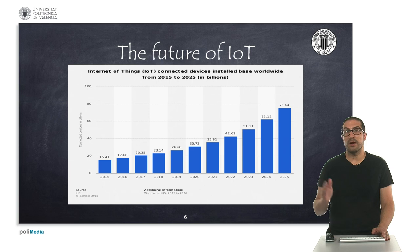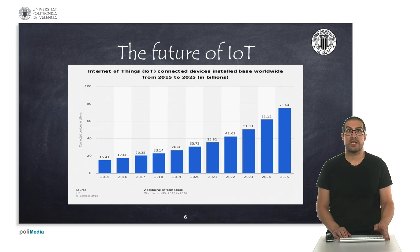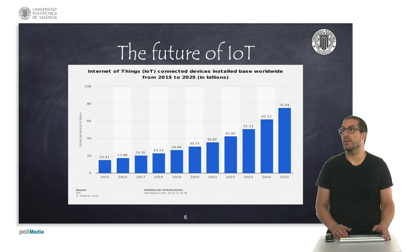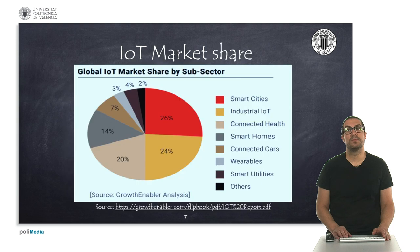This plot here shows that IoT devices are clearly growing with an exponential ratio. And thus, the relevance of knowing how to interact with these devices is very important nowadays.